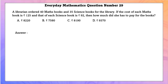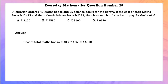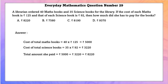Everyday Mathematics question number 29. A librarian ordered 40 math books at ₹125 each and 35 science books at ₹92 each. Cost of math books = ₹5,000; cost of science books = ₹3,220. Total amount paid = ₹8,220.